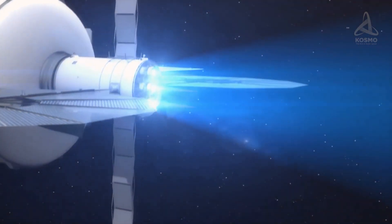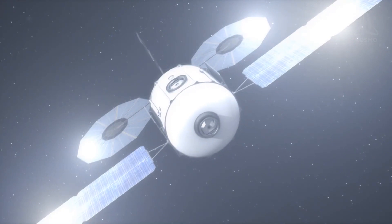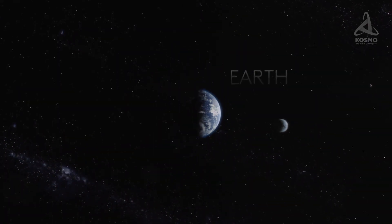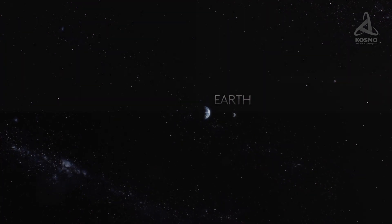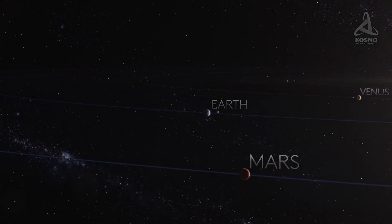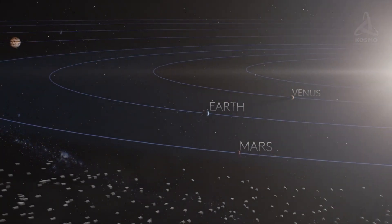However, if future scientists are able to create a more powerful version of the ion thruster, it will allow spaceships to reach the surface of Mars in just 39 days, which is approximately 7 times as fast as the current optimal travel time it takes to get to the Red Planet.